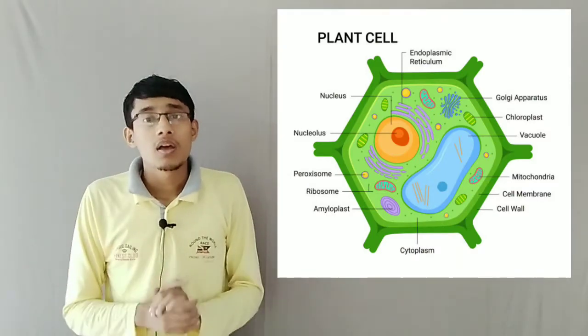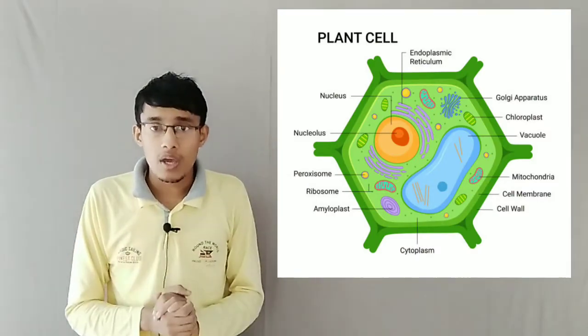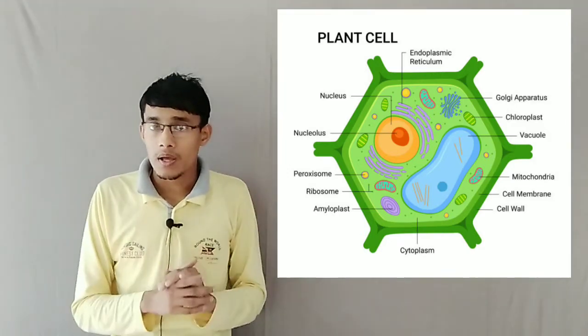In this chapter we are going to deal with the cells of both plants and animals. Plant cells and animal cells are somewhat different from each other. As you can see, the plant cell is somewhat hexagonal in shape. The plant cell has a cell wall and then a cell membrane.